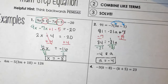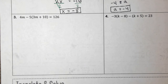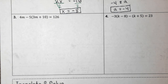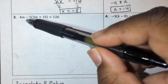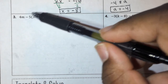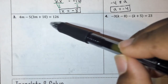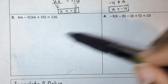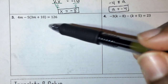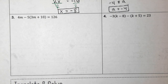Number three. This equation is a little more complex but it's doable: 4m - 5(3m + 10) = 126. I want you to try this on your own, but first: you need to distribute the -5 into the parentheses to both terms, rewrite your equation, and then notice that you have two variable terms — you need to combine those and then solve. I'm going to pause and let you try that.